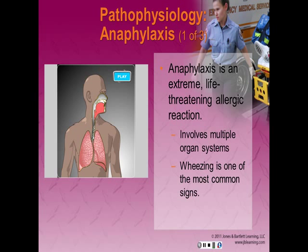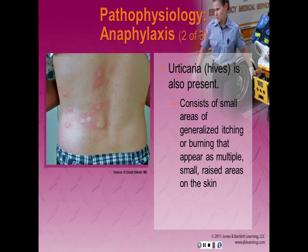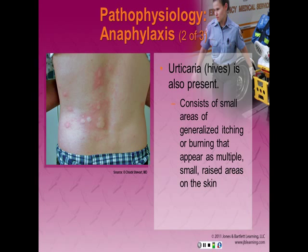Anaphylaxis is an extreme, life-threatening allergic reaction. Anaphylaxis involves multiple organ systems, and wheezing is one of the most common signs. Wheezing is a high-pitched whistling breath sound that is typically heard on expiration. It results from bronchial spasm, bronchial constriction, and increased mucus production. Urticaria, or hives, may also be present, consisting of small areas of generalized itching or burning that appear as multiple small raised areas of the skin. You may also note hypotension as a result of hypovolemic shock due to increased capillary permeability.